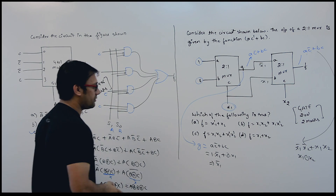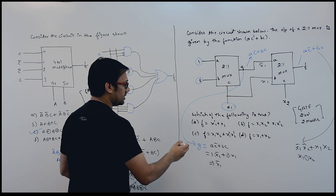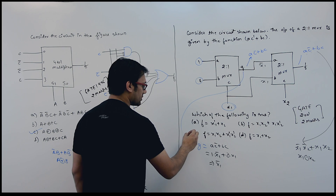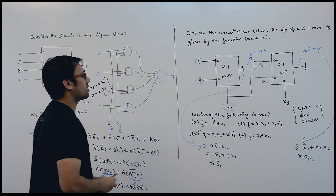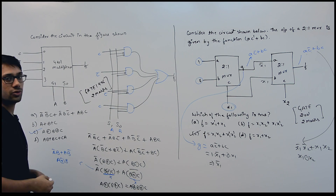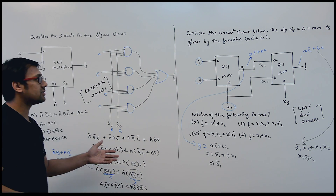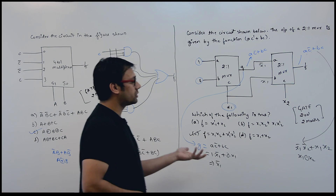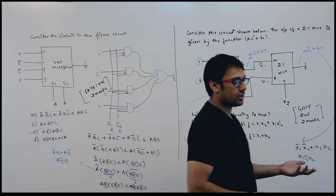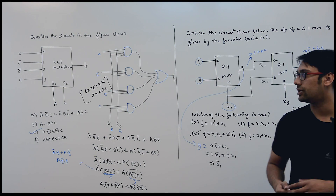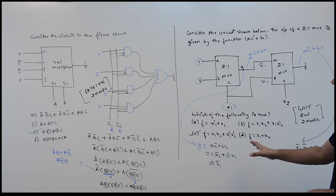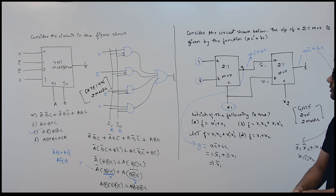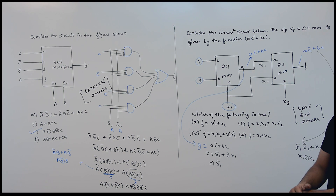This can be represented as x1 XNOR x2, so option C is correct in this case. Both these questions are very easy. In both questions, they are just representing a function using a multiplexer circuit and we have to determine the output of the function f.